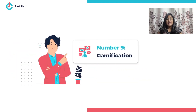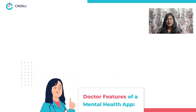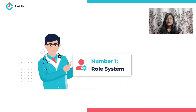Number nine: gamification — the app must also provide games that enhance cognitive skills as well as promote relaxation and meditation. Now that was all about patient features. Let's check the doctor features that a mental health app should provide. Number one: role system — doctors must be able to comprehensively display their profiles, experience, expertise, credentials, and more from within the app itself.